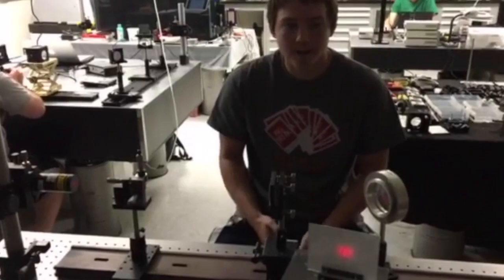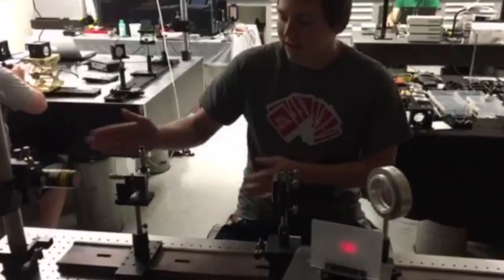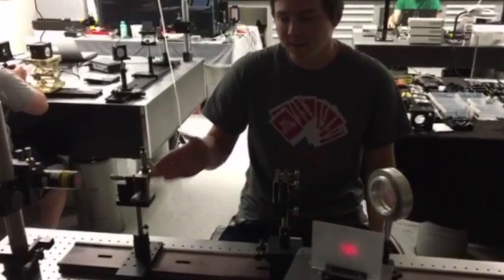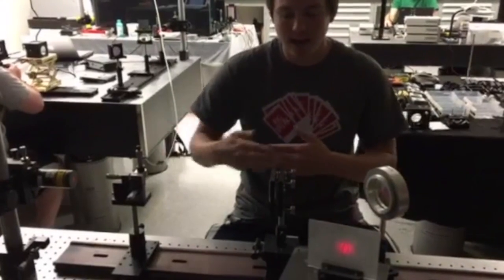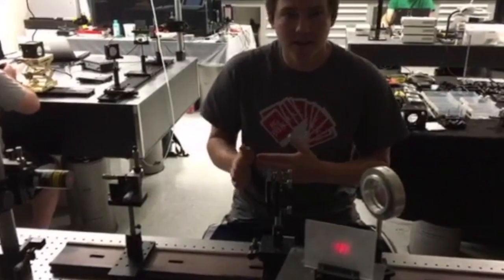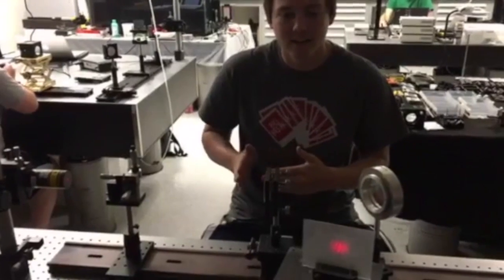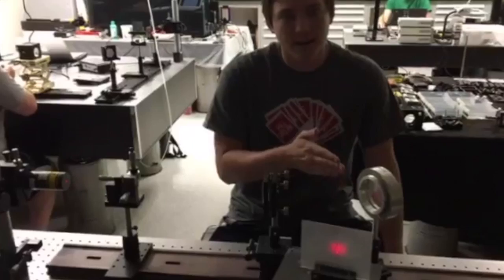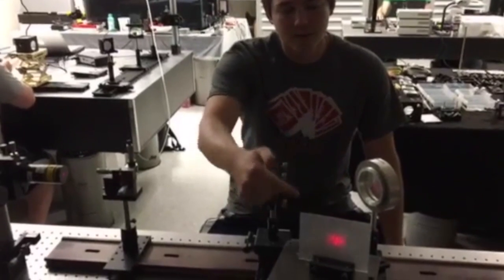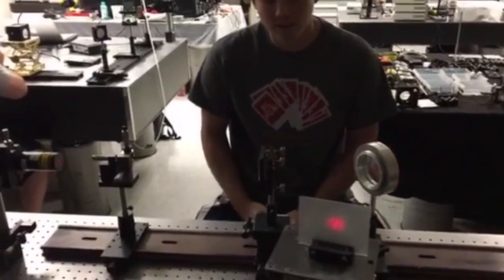So our setup for the non-wedge shear plate interferometer, we had our laser, which was spatially expanded through the spatial filter. Then we had our collimating lens, which we had X and Y translation, so we could de-center and defocus. And then that hit our non-wedge shear plate, and then that reflected off to a diffuse plate so that we could actually see what was happening.